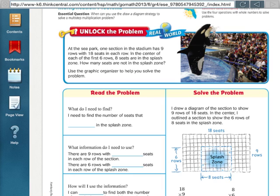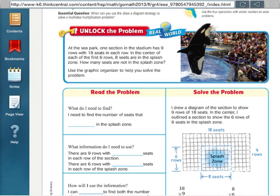A multi-step problem means you have to do more than one operation to find the answer. In this problem, at the sea park one section of the stadium has 9 rows with 18 seats in each row. In the center of each of the first 6 rows, 8 seats are in the splash zone. How many seats are not in the splash zone?